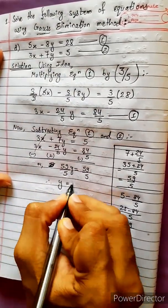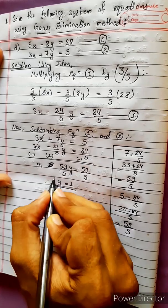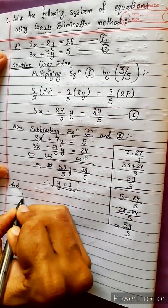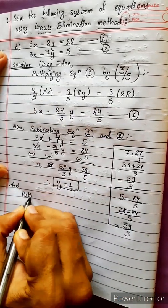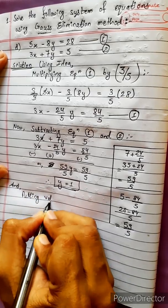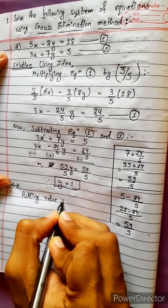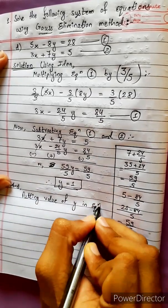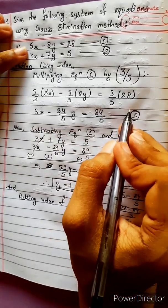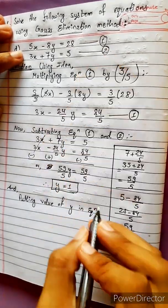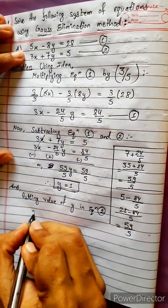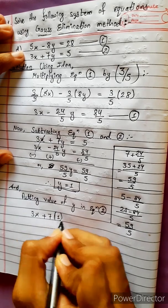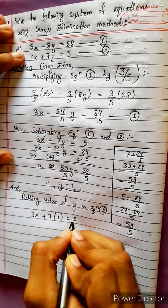Therefore y equals 1. Putting the value of y into any equation we like — let's use equation 2. In equation 2: 3x plus 7 into 1 equals 5.